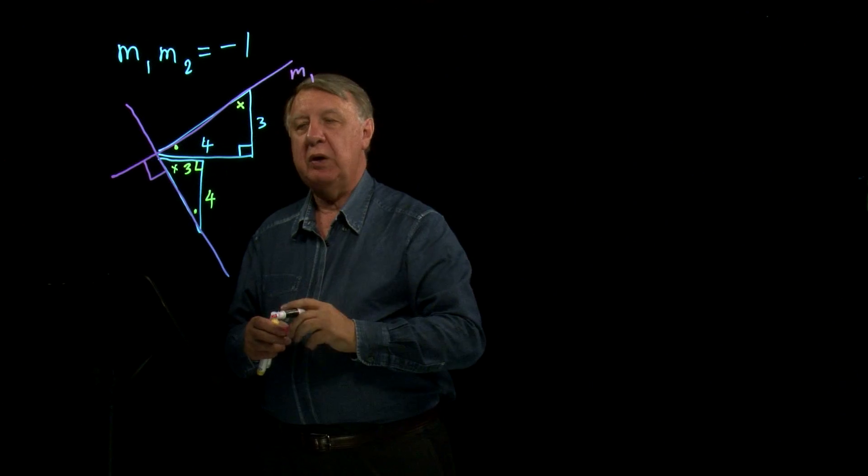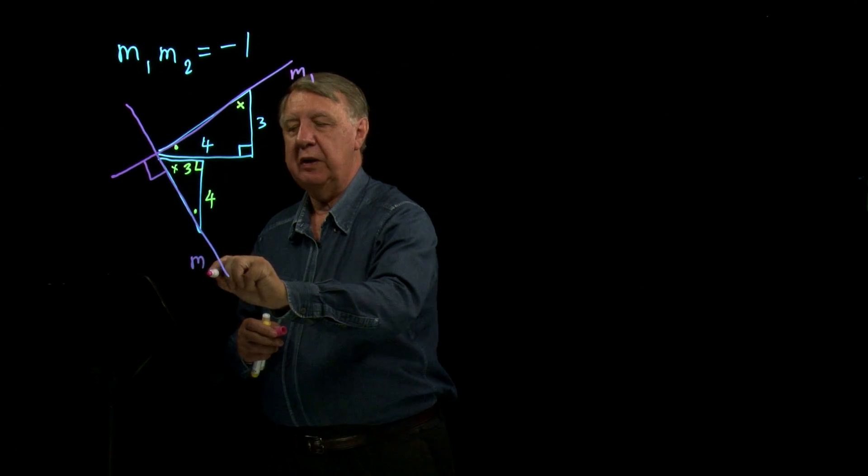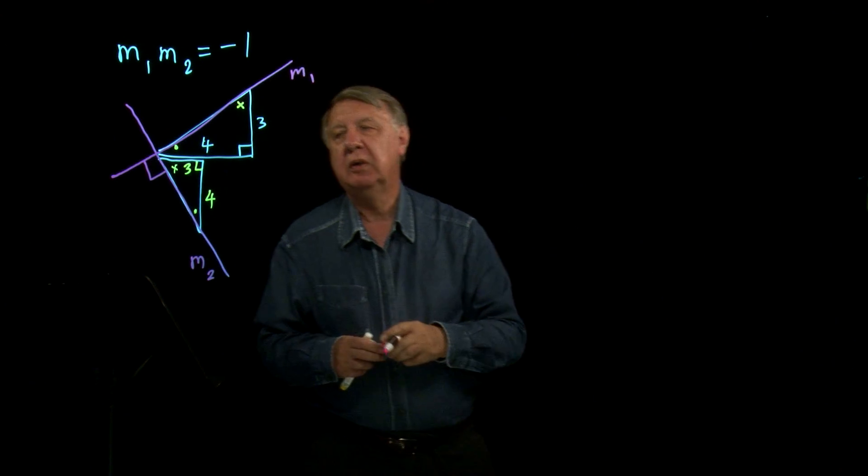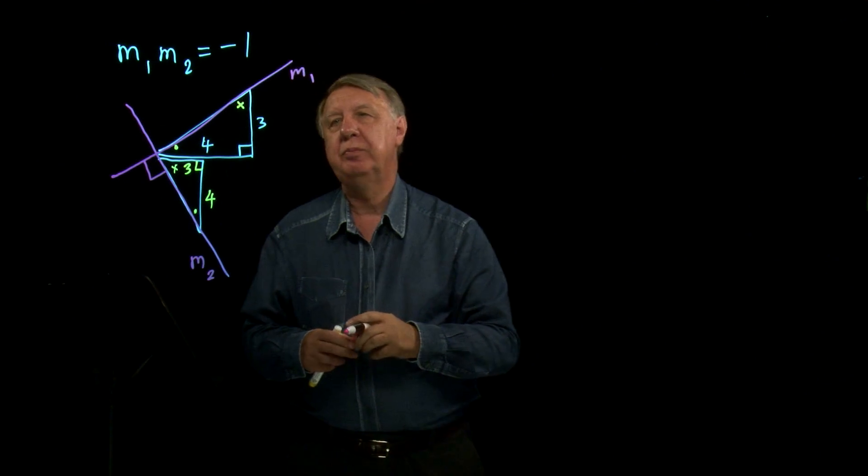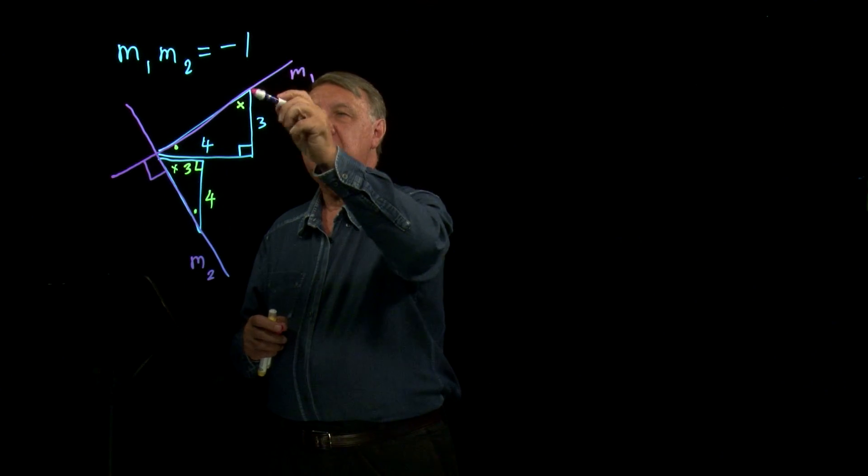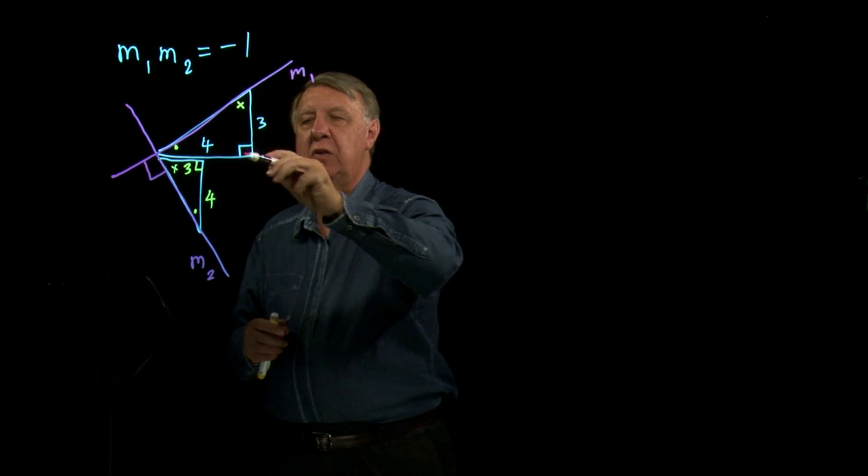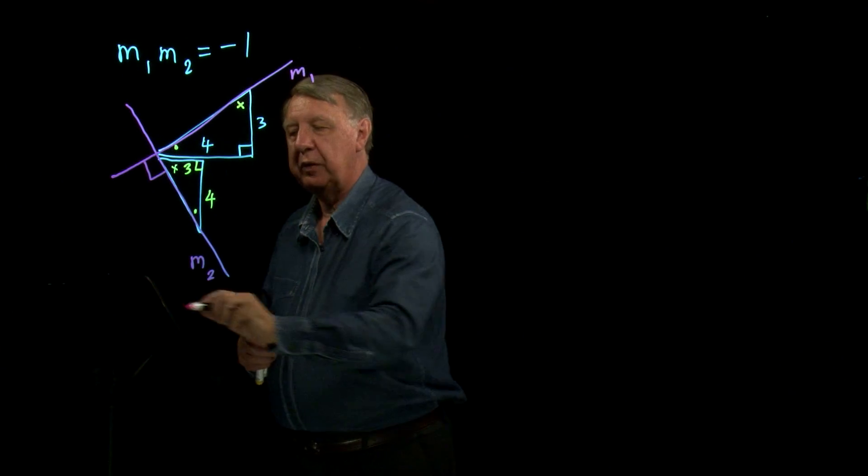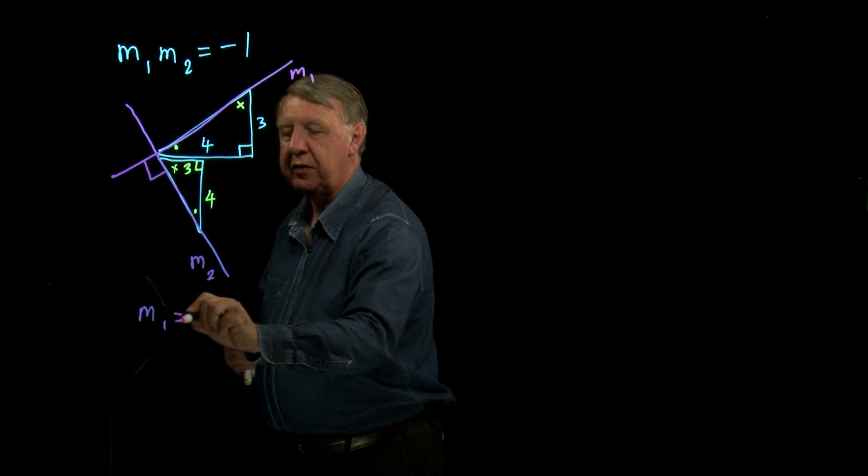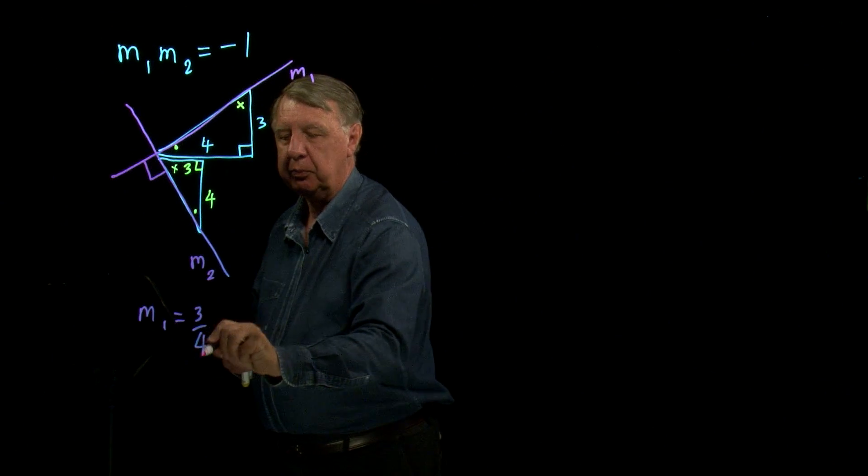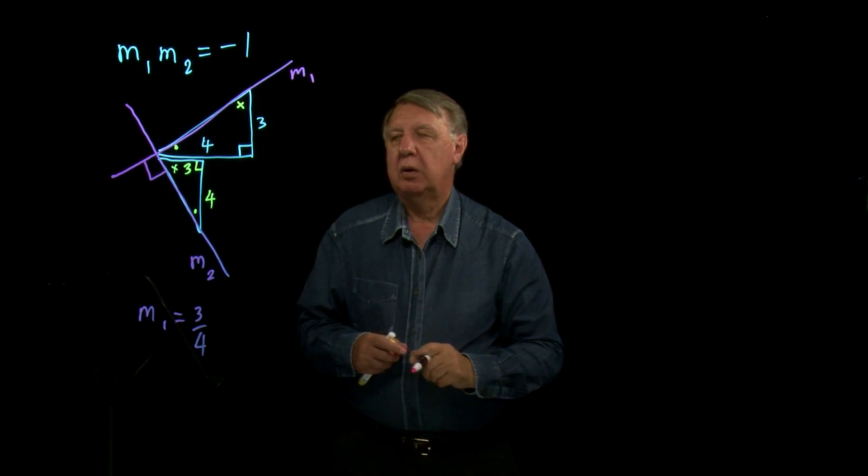So if I call that one gradient m1 and this one gradient m2, then let's see what happens. m1: the vertical distance is 3, the horizontal distance is 4, so m1 is 3 over 4.